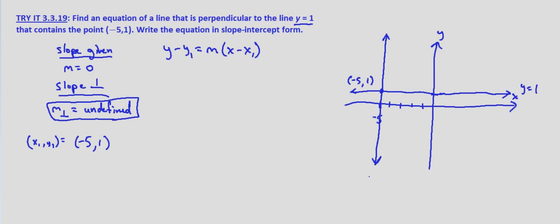Which you can see from the graph that I drew over here, this is x equals negative 5. So anytime we're given a horizontal line, y equals 1, and a point negative 5, 1, the equation of our line is just going to be the vertical line that is at the x coordinate. So x equals negative 5.